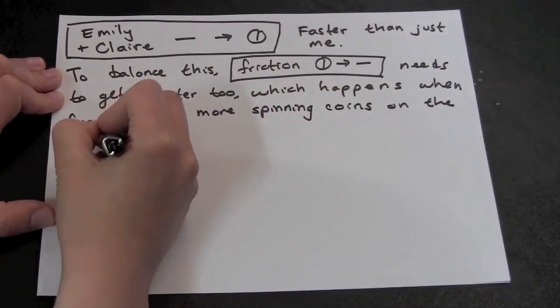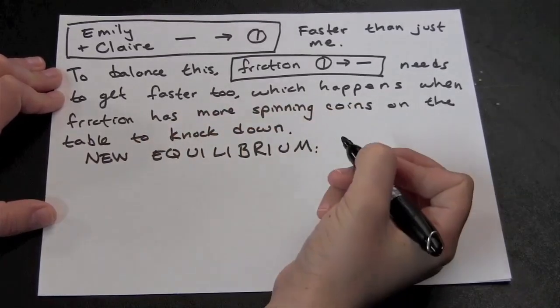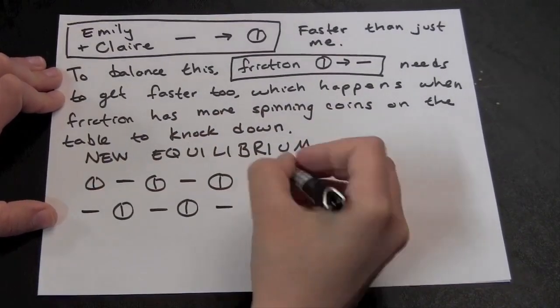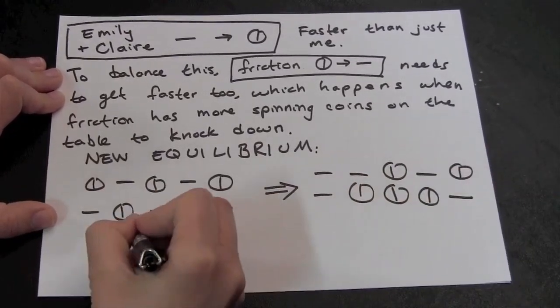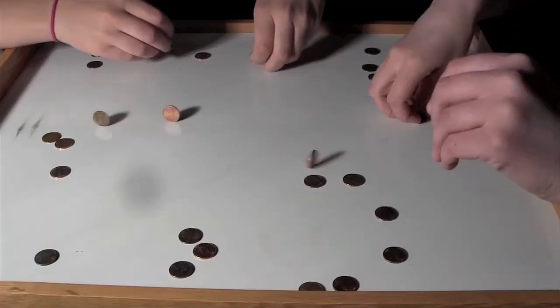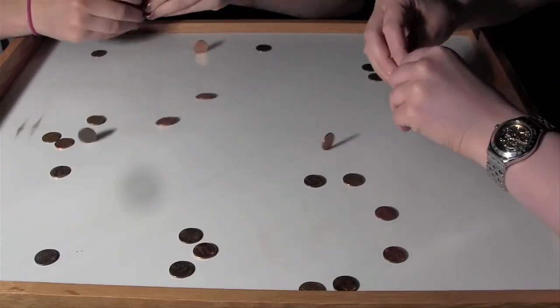So the new equilibrium happens when there are five coins up and the rest are down. At five coins up, Claire and I can spin up a coin at the same rate that it takes friction to knock one down. So we're left at a stable dynamic equilibrium of five coins up.